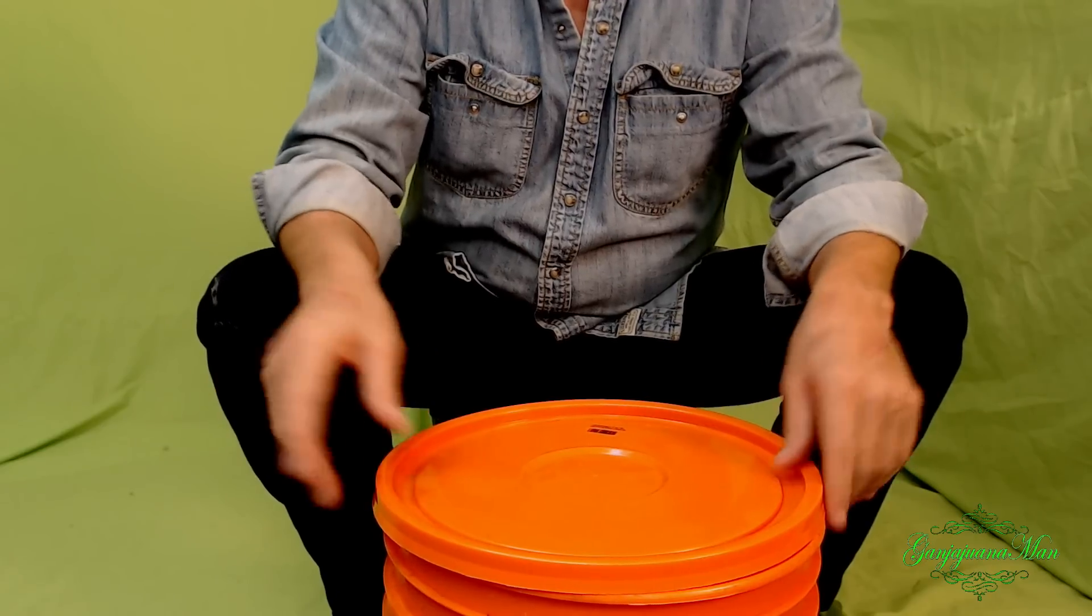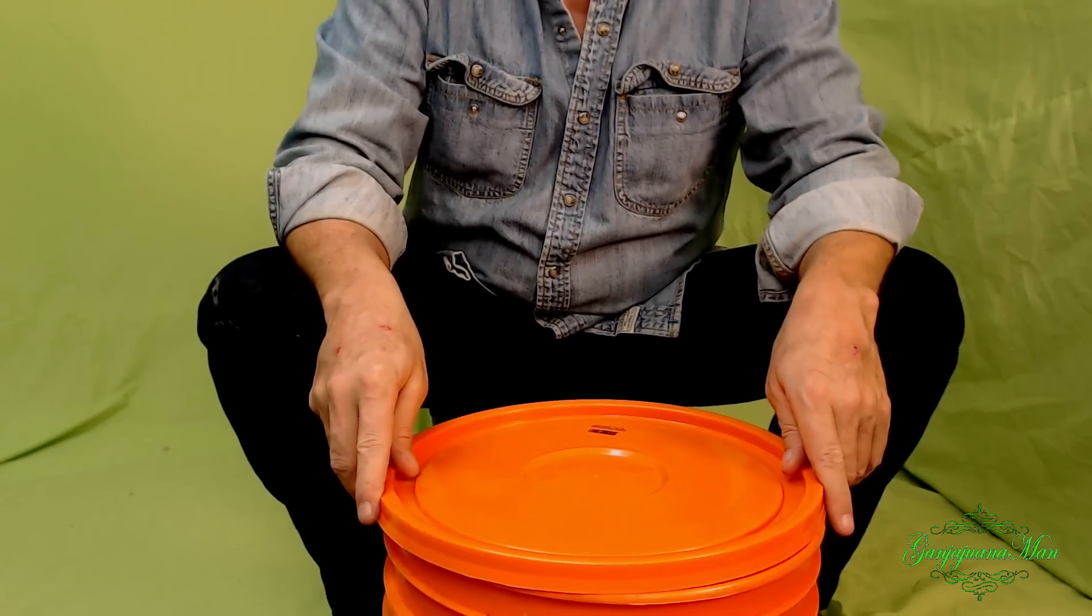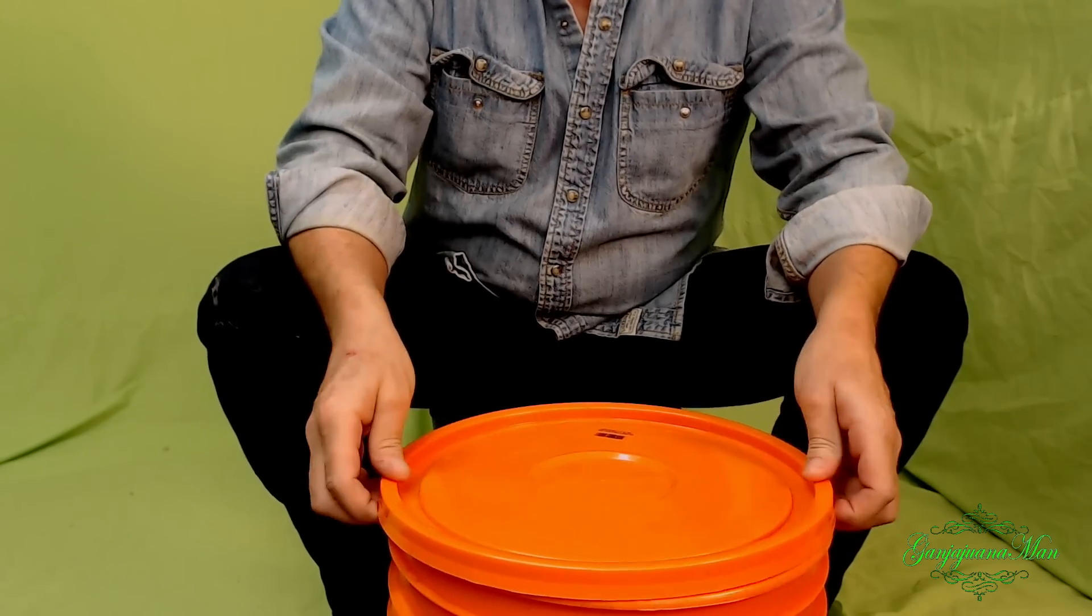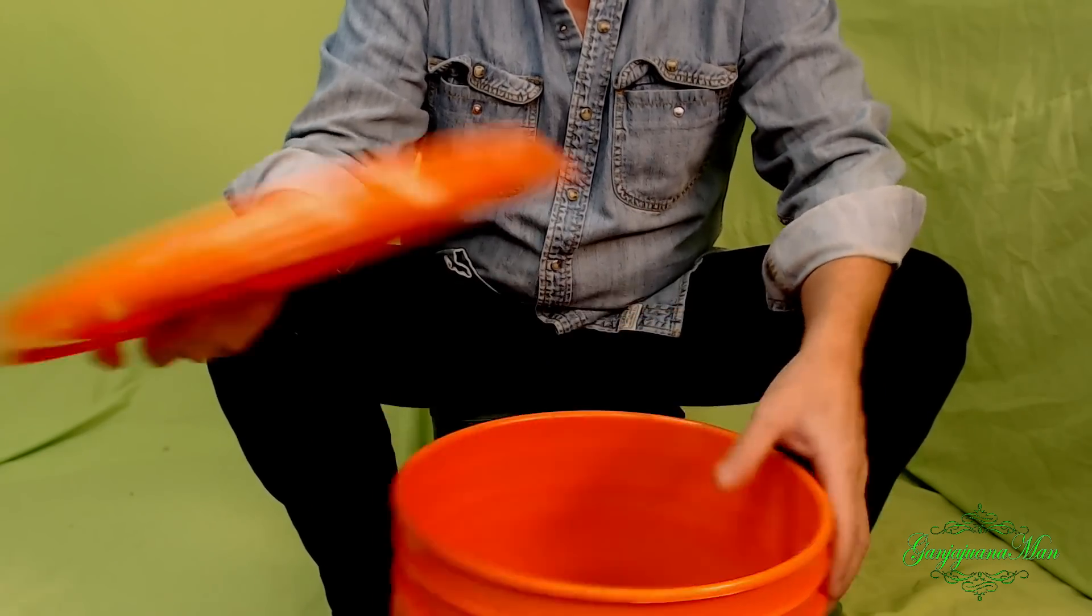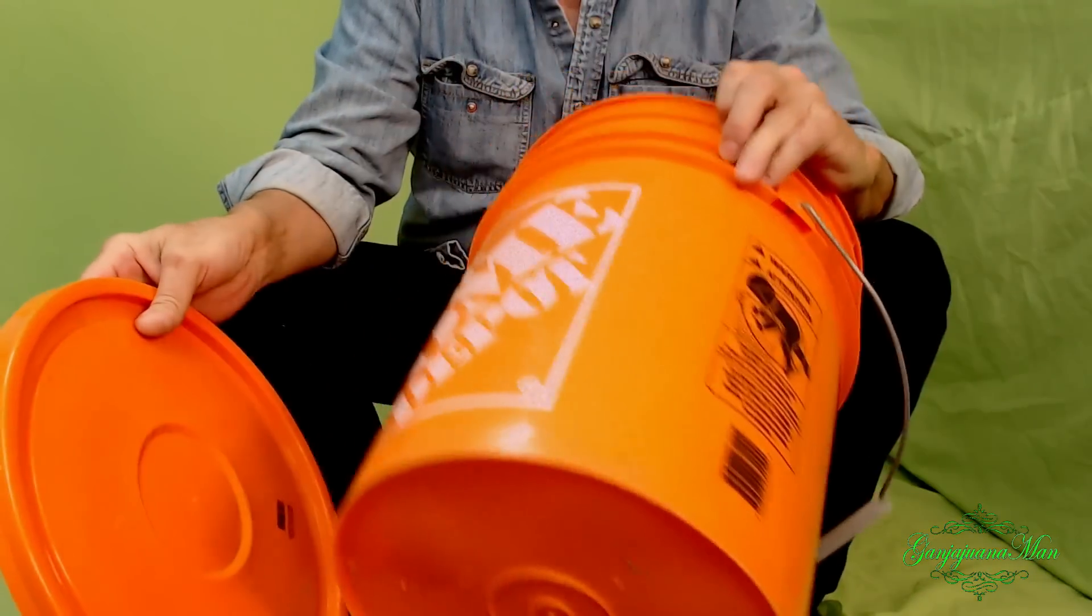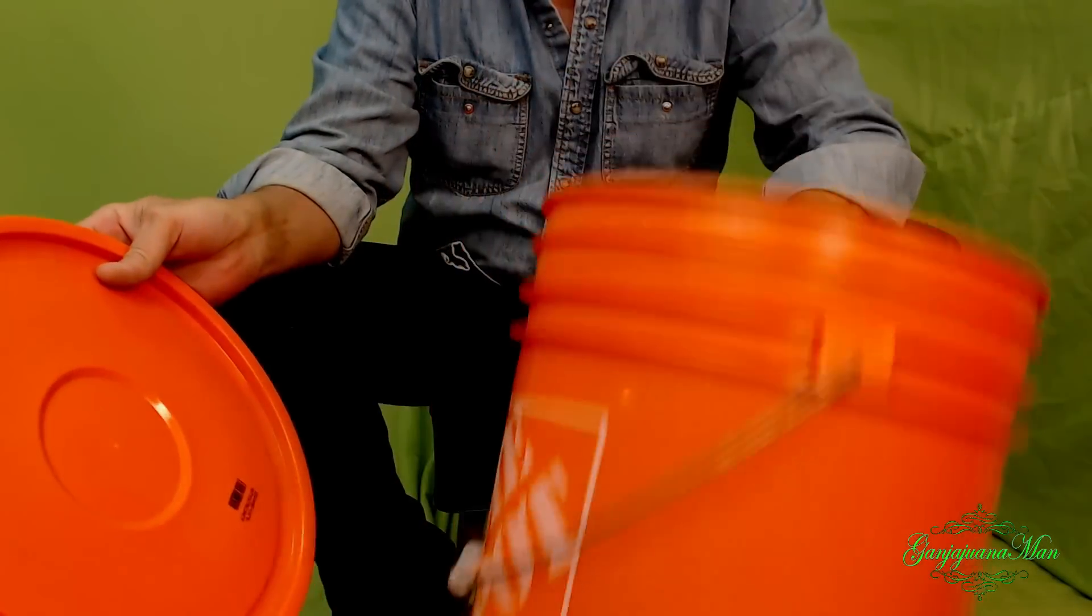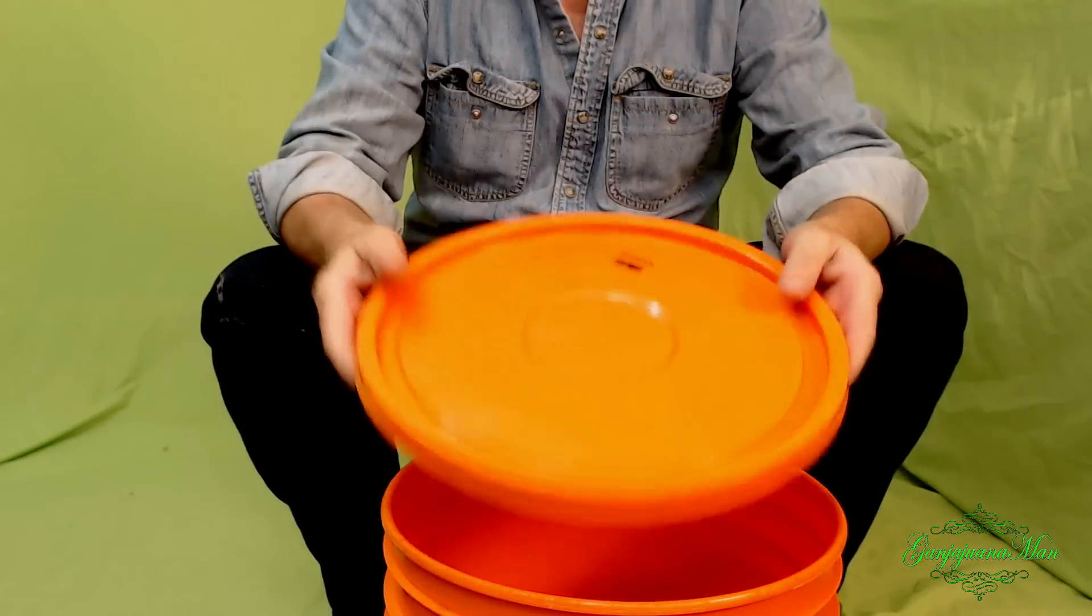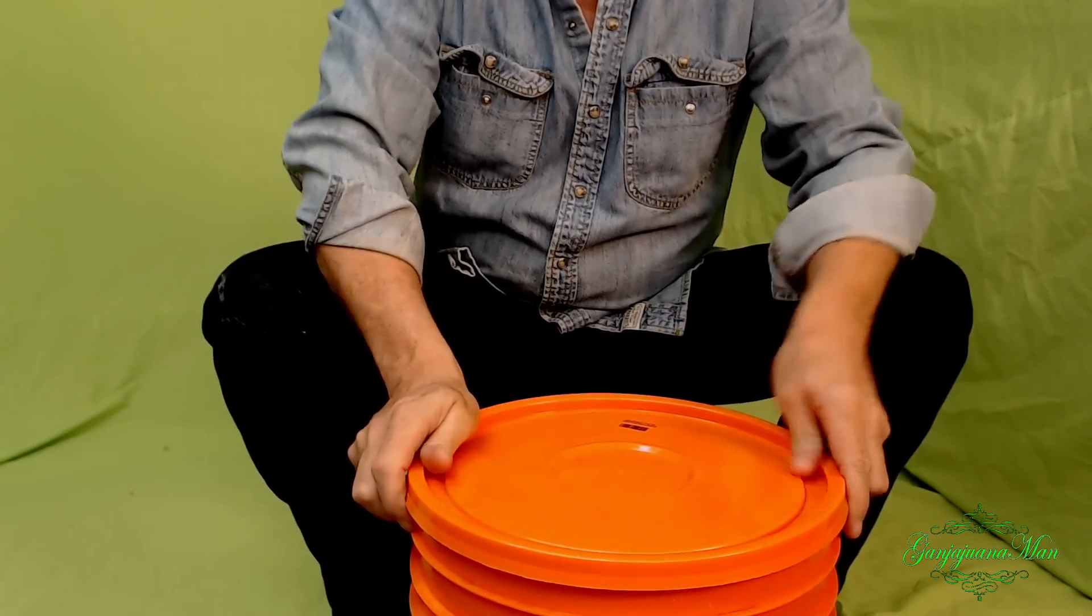Today we're going to make what I think is probably the simplest CO2 generator in the world. The things you're going to need, a five gallon bucket, I like these Home Depot ones, the brand new ones with the new lid, seals pretty much air tight.